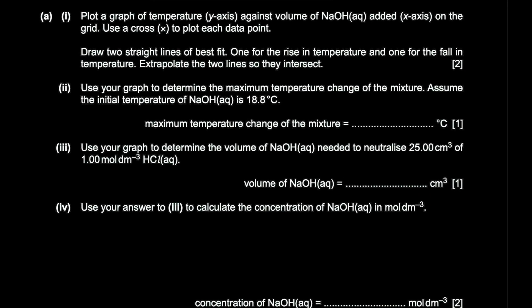Using the graph to determine the maximum temperature change: the maximum temperature is 27.75°C and the initial temperature of aqueous sodium hydroxide is 18.8°C, so ΔT = 27.75 − 18.8 = 8.95°C.